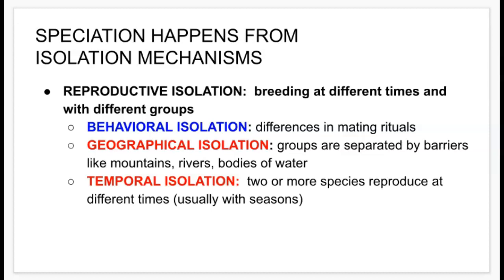When you talk about reproduction with temporal isolation, you think of it in terms of seasons. But there are some ocean organisms that will reproduce at night, and some will even reproduce under a full moon. So there are different types of temporal isolation related to speciation.